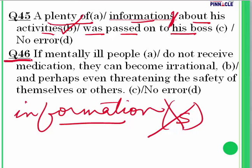Question 46: 'If mentally ill people do not receive medication, they can become irrational and perhaps even threatening the safety of themselves or others.' This sentence is absolutely correct. The answer is D — no error.